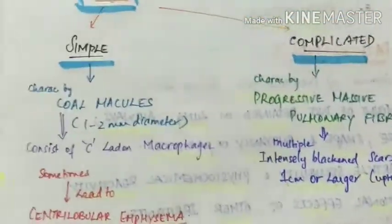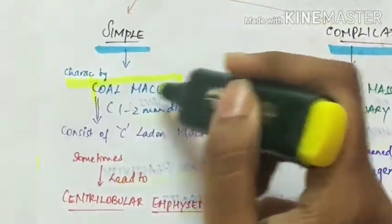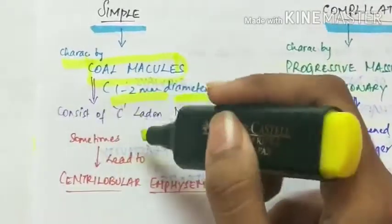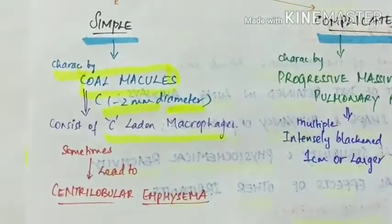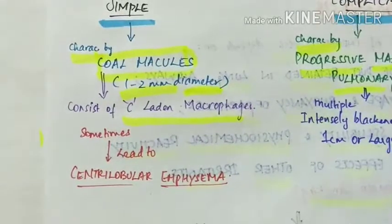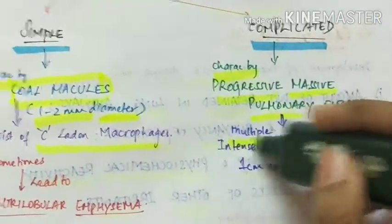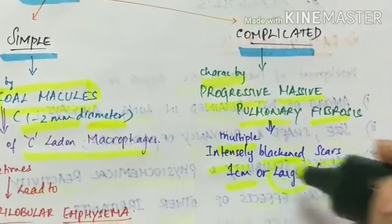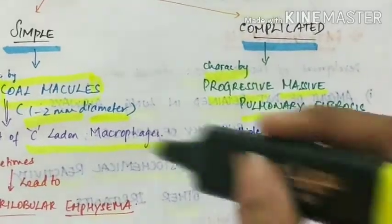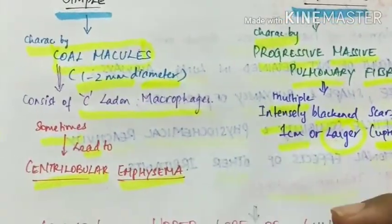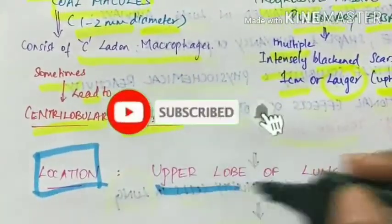Simple anthracosis is characterized by coal macules which are 1 to 2 mm in diameter and consist of carbon-laden macrophages. Complicated anthracosis is characterized by progressive massive pulmonary fibrosis with multiple intensely blackened scars 1 cm or larger, and can be up to 10 cm. Simple anthracosis can sometimes lead to centrilobular emphysema. The location of anthracosis is most commonly the upper lobe of the lung.